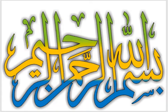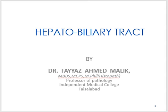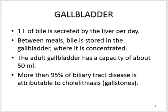Bismillah ar-Rahman ar-Rahim. After concluding the discussion of the liver and its pathology, we have started with the gallbladder. Almost one liter of bile is produced by the liver per day. Bile is stored in the gallbladder where it is concentrated. The adult gallbladder has a capacity of about 50 milliliters to store the bile.